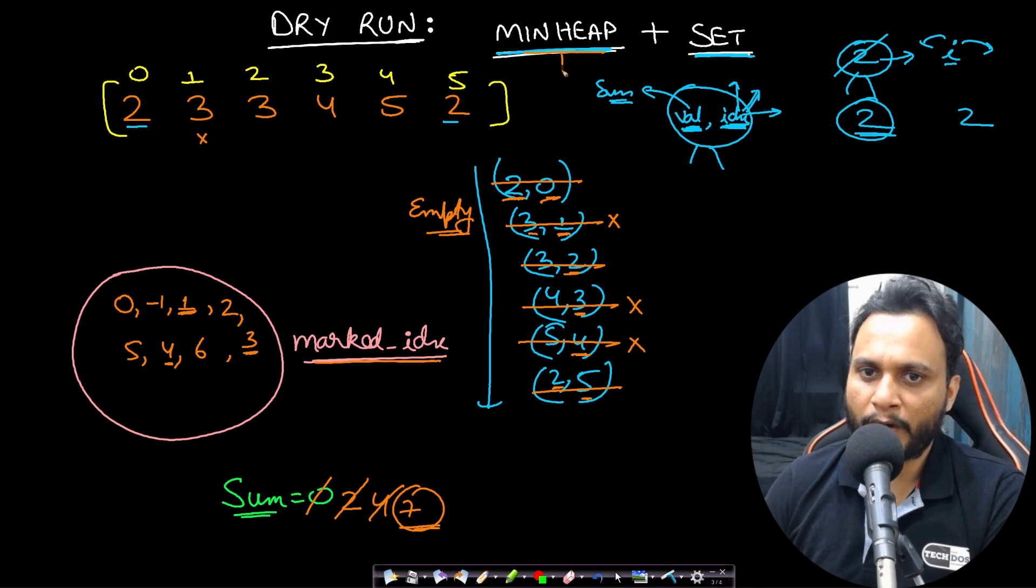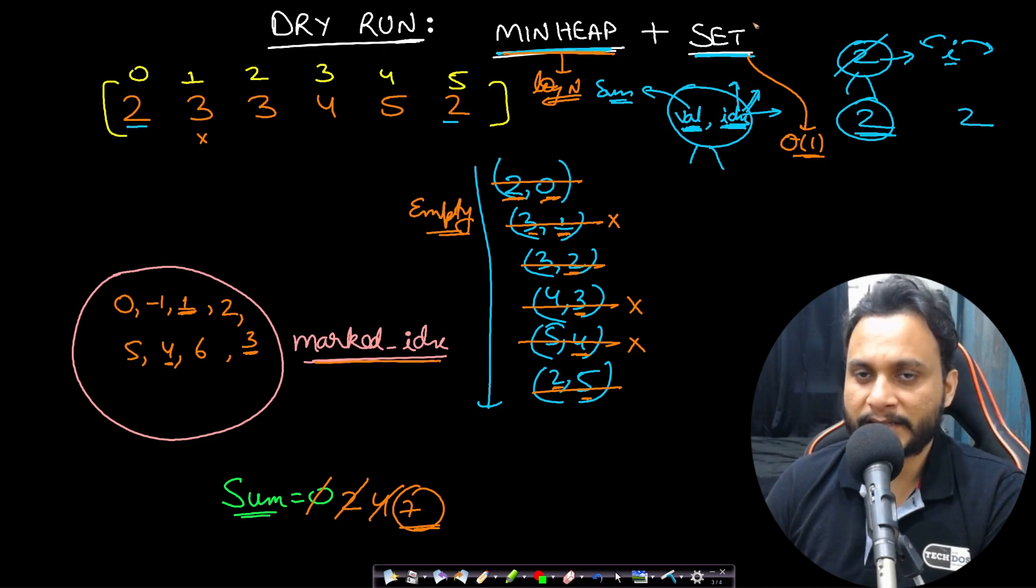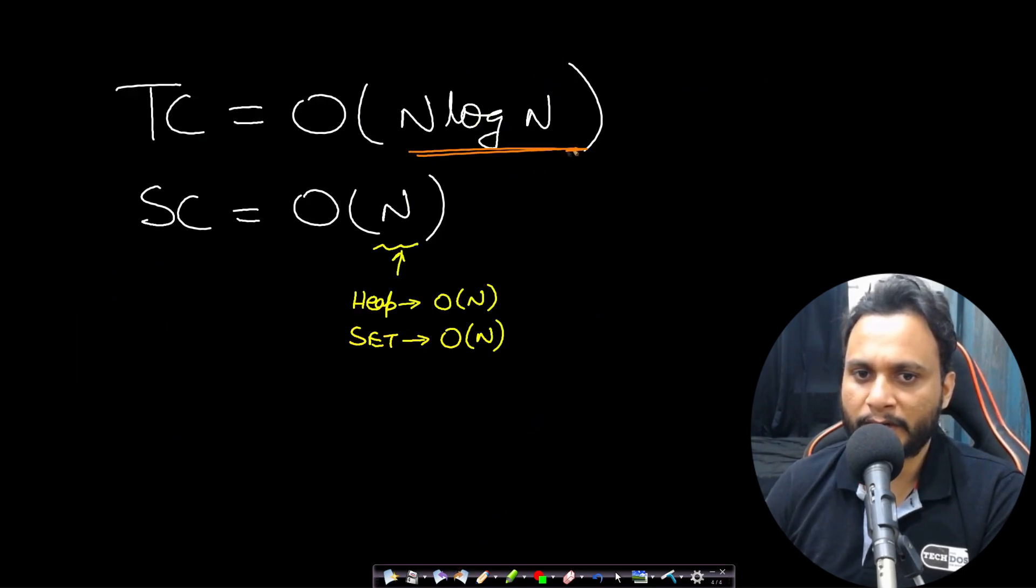Now if you consider this entire approach, then the heap will always give me the minimum item at every step in log n time. And the set insert and remove operation, I will just consider it to be theta of 1 or order of 1 as I will be taking an unordered set. The space complexity will be all the items are pushed inside the heap as well as in the worst case in the set. So space complexity will be order of n and the time complexity will be order of n log n because we are doing n times push and pop operation from the heap. So this is the entire approach and I hope it was clear.